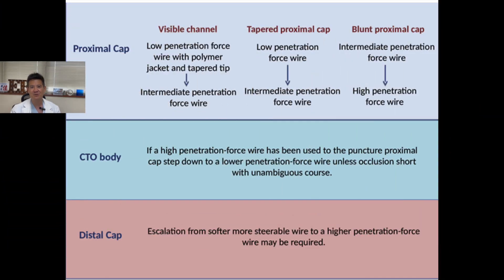If you have a tapered proximal cap with a residual channel, use an XTR. If you have a tapered proximal cap without a channel, use XTA. If you have a blunt stump, use a Gaia Second or Gaia Next wire. However, as we do more CTOs, we begin to recognize other types of proximal cap that are more problematic.